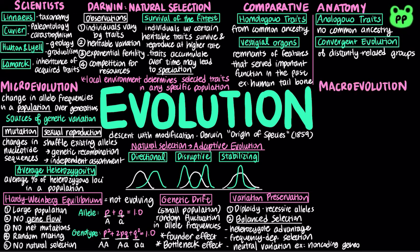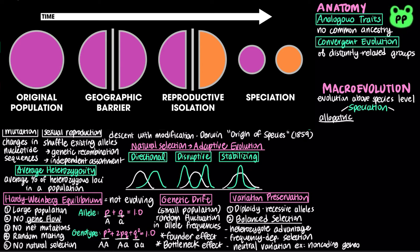Macroevolution refers to evolutionary change above the species level. There are two types of speciation, or the rise of new species. In allopatric speciation, geographic separation restricts gene flow between populations, to the point that even if contact is restored between populations, interbreeding is prevented.